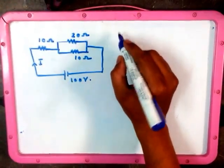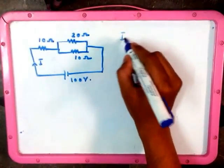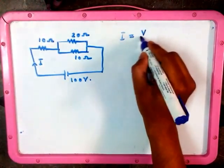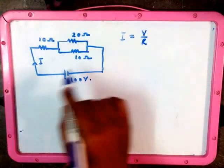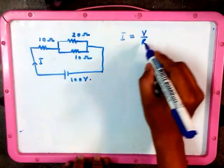We have the formula for Ohm's law: I is equal to V divided by R. Since we don't know the value of R overall, that is the equivalent R, we need to find out the equivalent R.